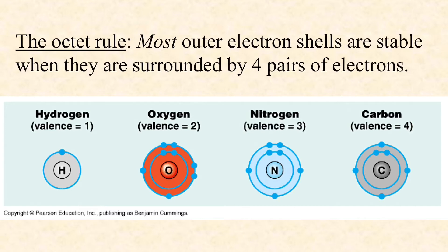These bonds form — these electrons are shared — in order to stabilize the atoms. It turns out that most atoms are stable when they have four pairs of electrons in their outermost shell. If you don't remember orbitals and shells, go back and review that from chapter two. Hydrogen is the exception: it has one proton and essentially one electron, so that single electron needs to be paired off, but it doesn't need four pairs.